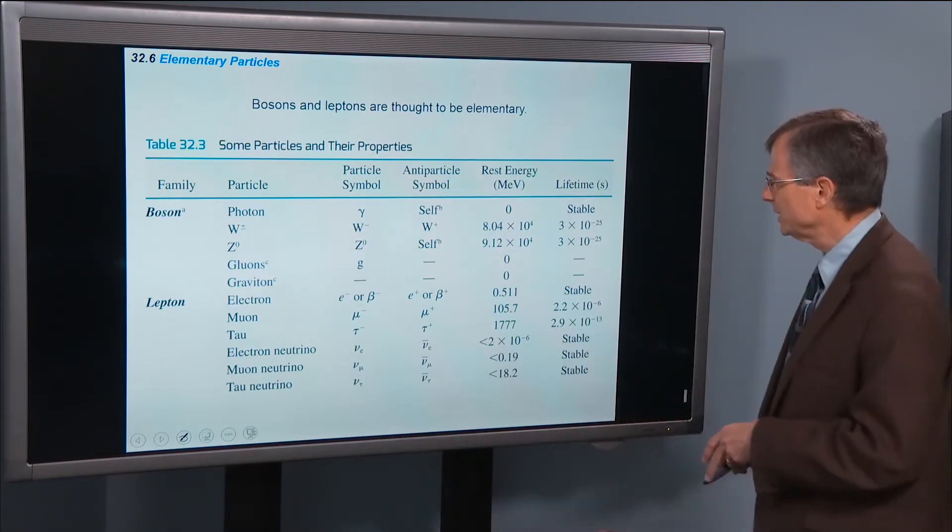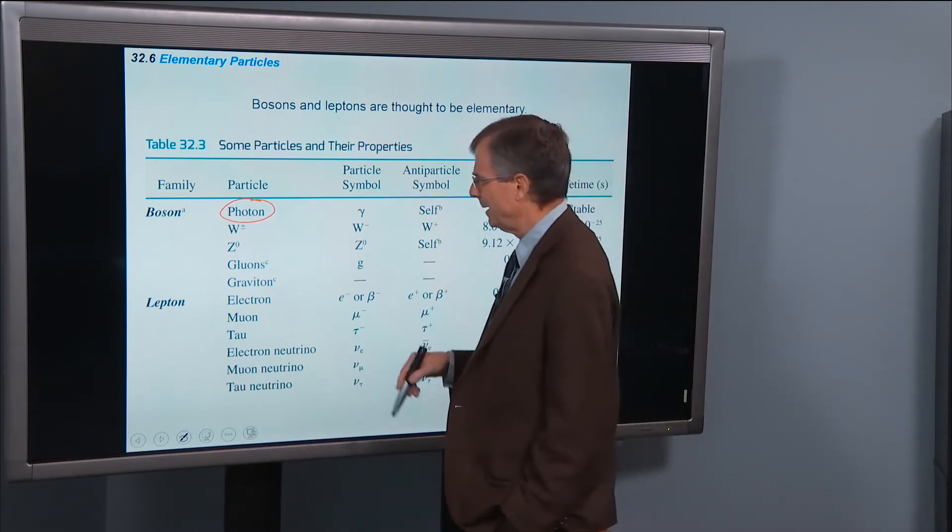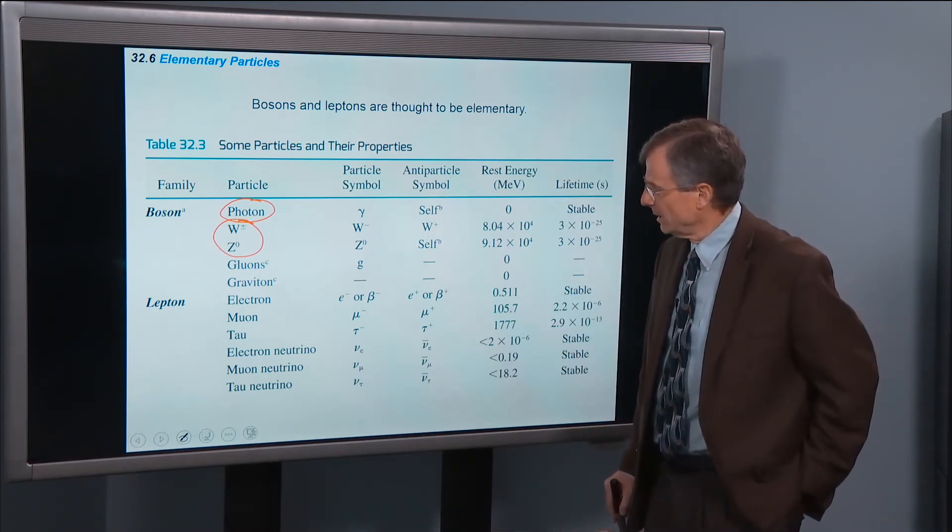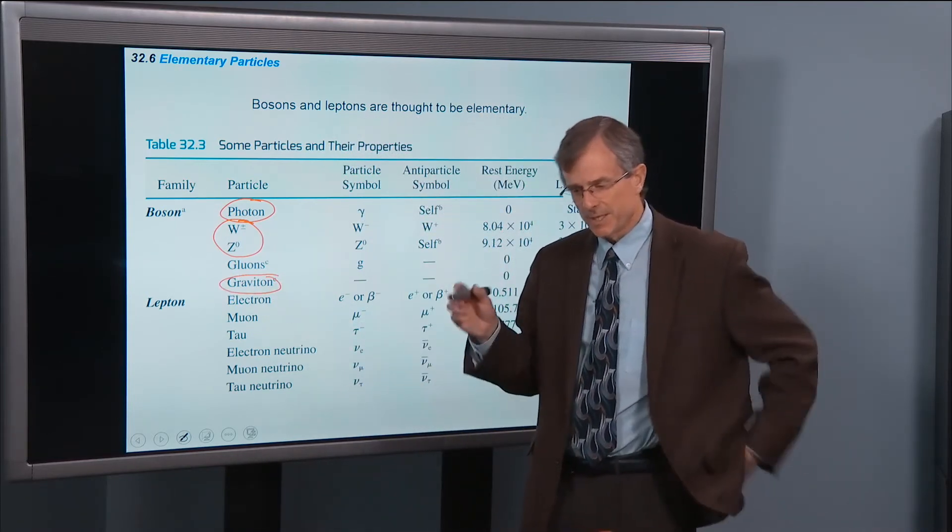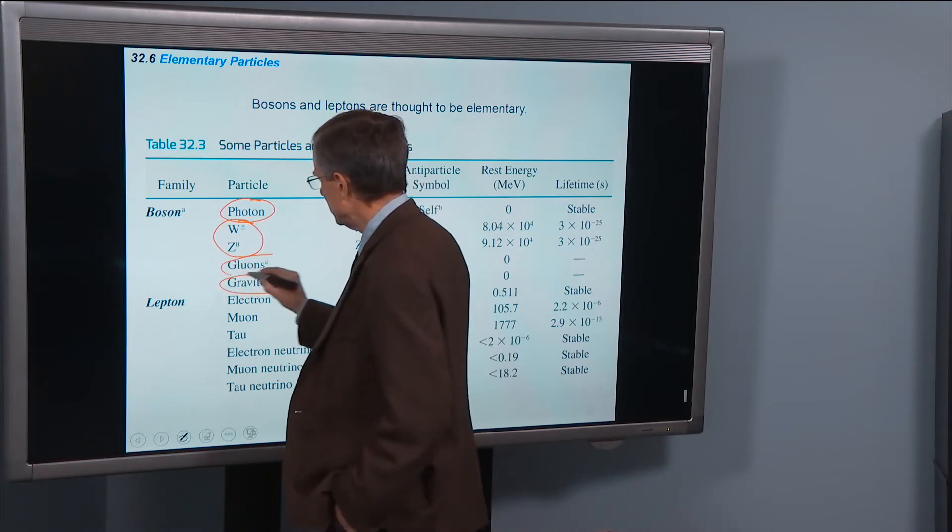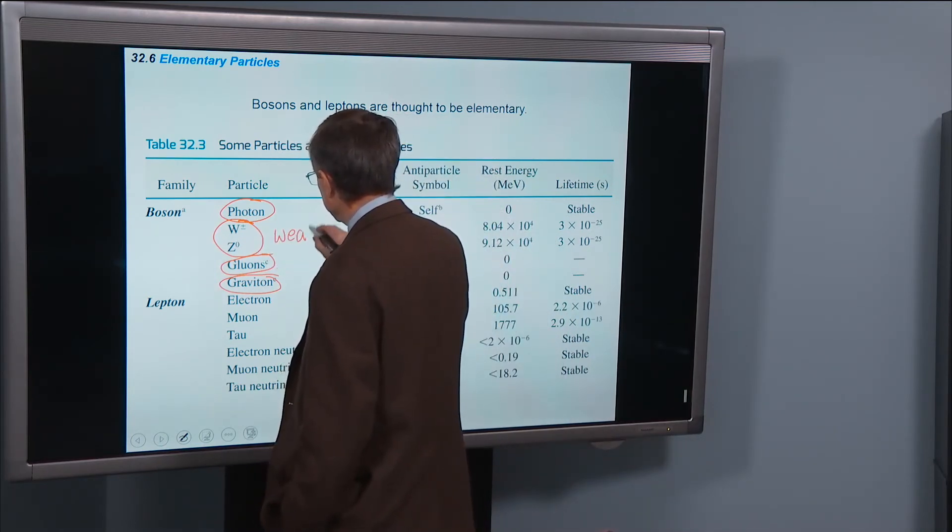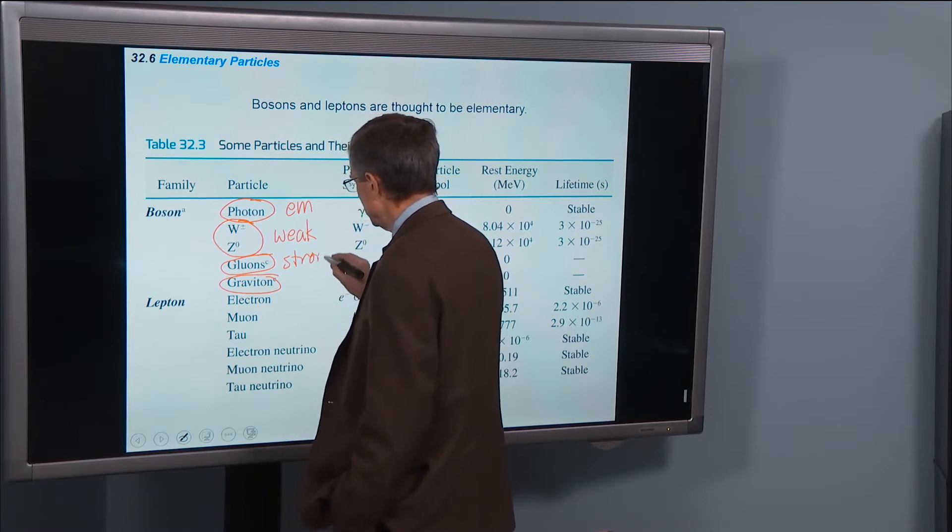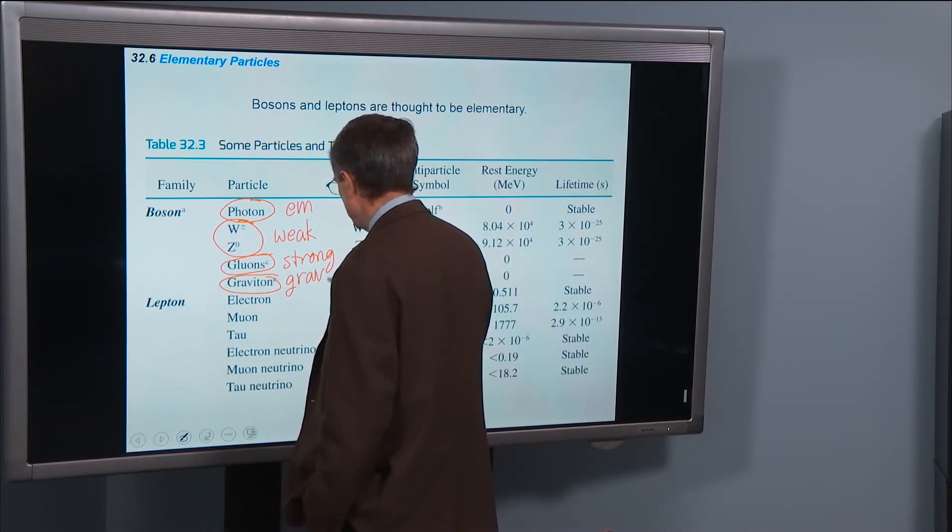Let's look at these particles. We talked about bosons. Photons mediate the electromagnetic interaction. The W and Z bosons mediate the weak interaction. Gravitons mediate the gravitational interaction. That's how two massive gravitational bodies communicate with each other is via gravitons. And then gluons are what mediate the strong interaction. Gluons mediate the strong nuclear reaction. And then gravitons mediate the gravitational interaction.